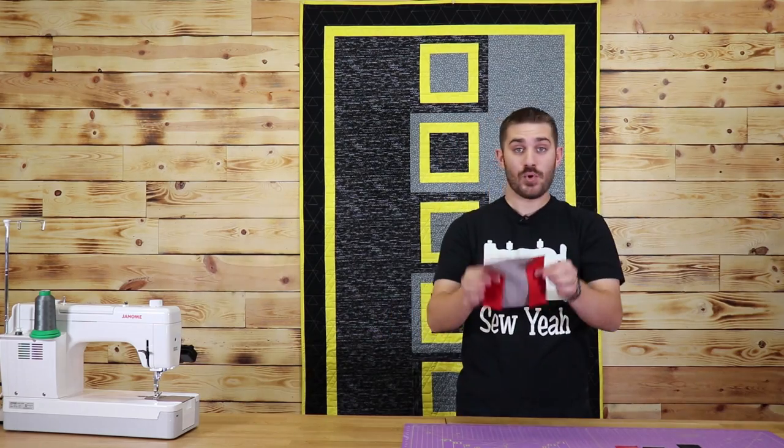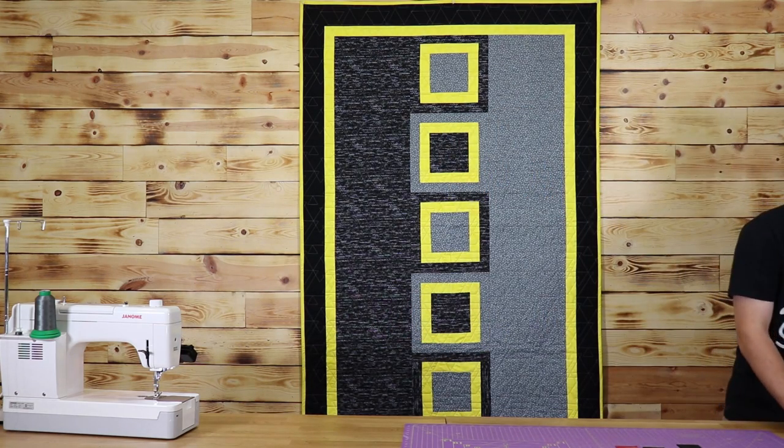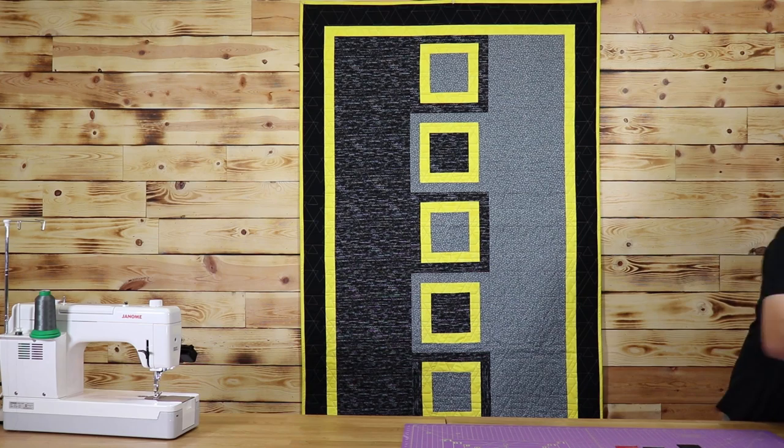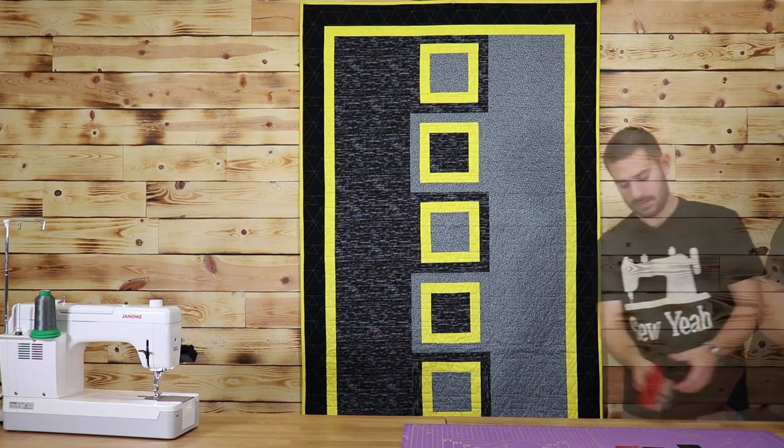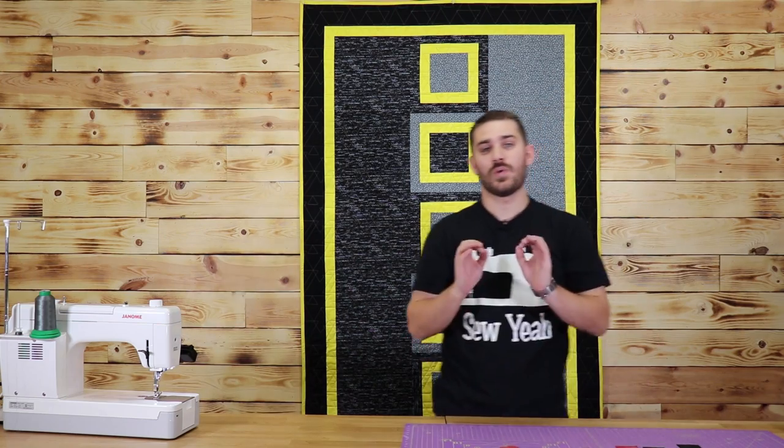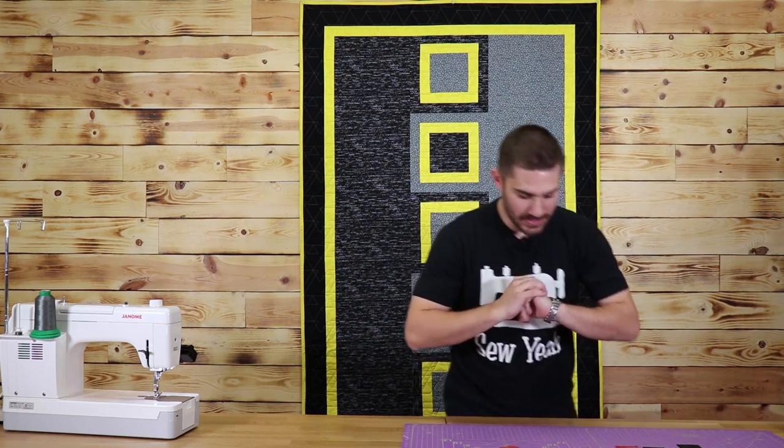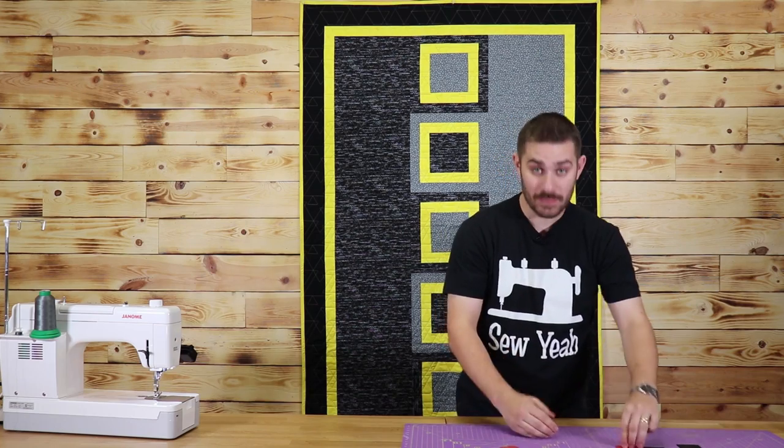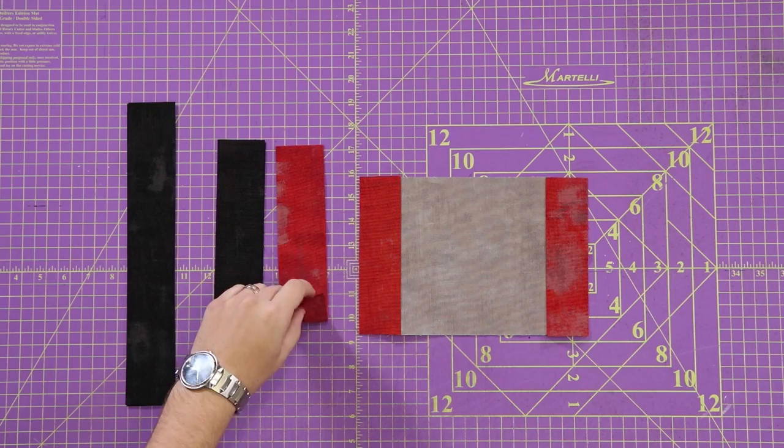Now that I have both my sides sewn on, I'm going to iron these seams to the dark side here. Something important in this quilt is that you want to do all of your ironing. You want to make sure everything's ironed flat. That way your next strip lines up perfectly with your next step.